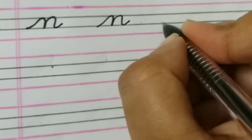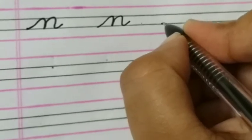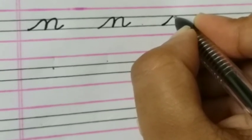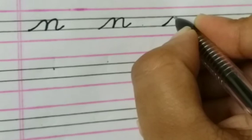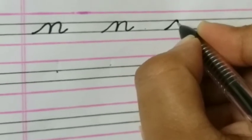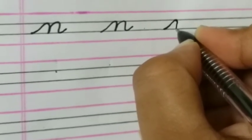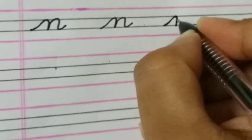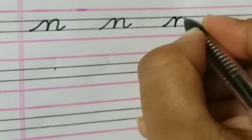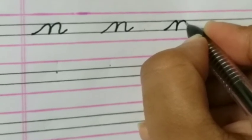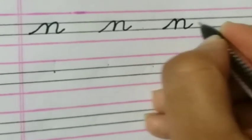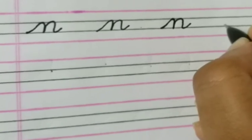Starting from the third line, make a tail, take it up to the second line, bring it back to the third line, again take it up to the second line, bring it back to the third line, and make a tail like this.